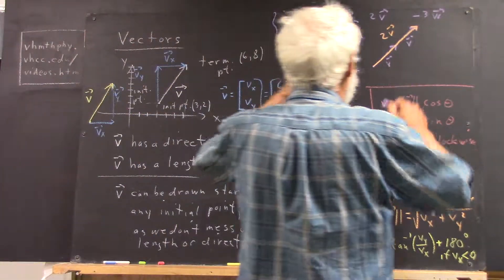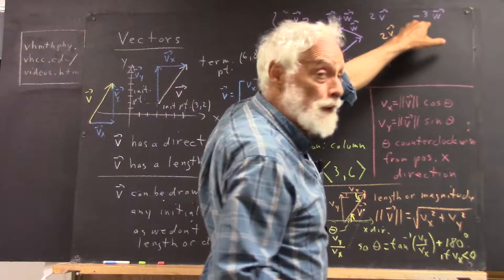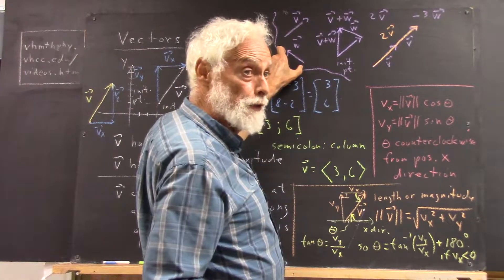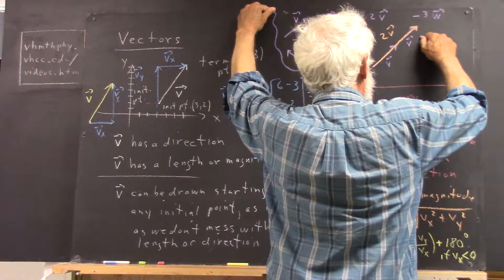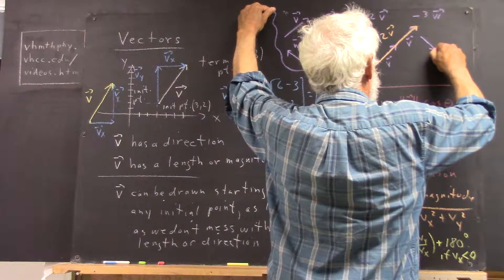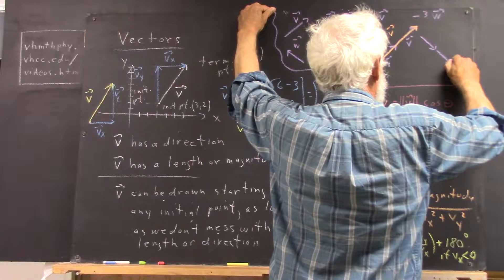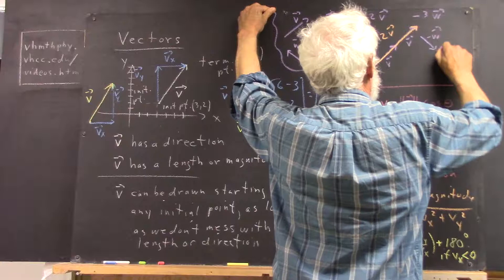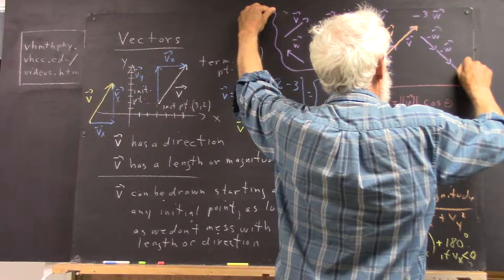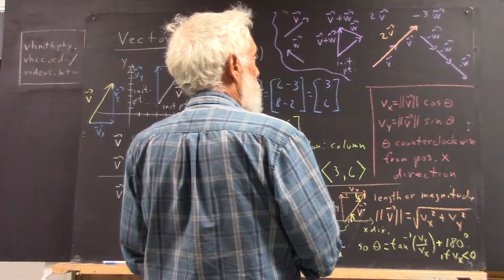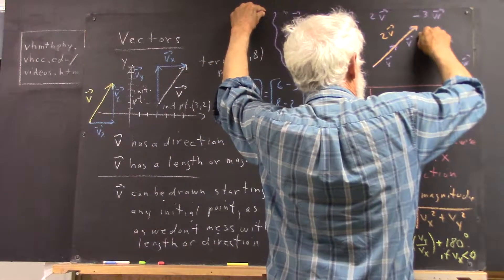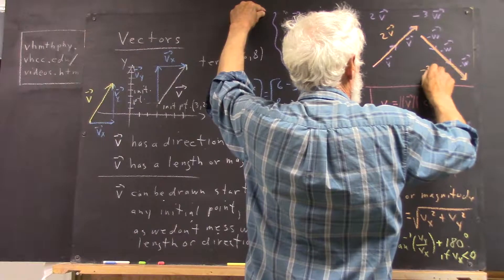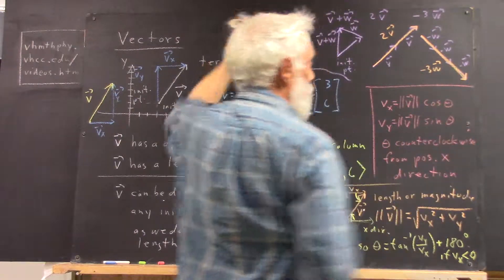So the negative is going to make a vector, it's going to reverse the direction of a vector without changing its length. So I could do negative w and negative w and negative w giving me the vector negative 3w.